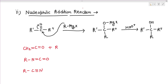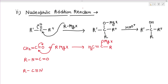For ketene (CH₂=C=O), RMgX attacks the electrophilic carbon: the alkyl group R attaches, the bond shifts, and we get CH₂=C(R)–OMgX. After hydrolysis, we obtain CH₂=C(R)–OH.